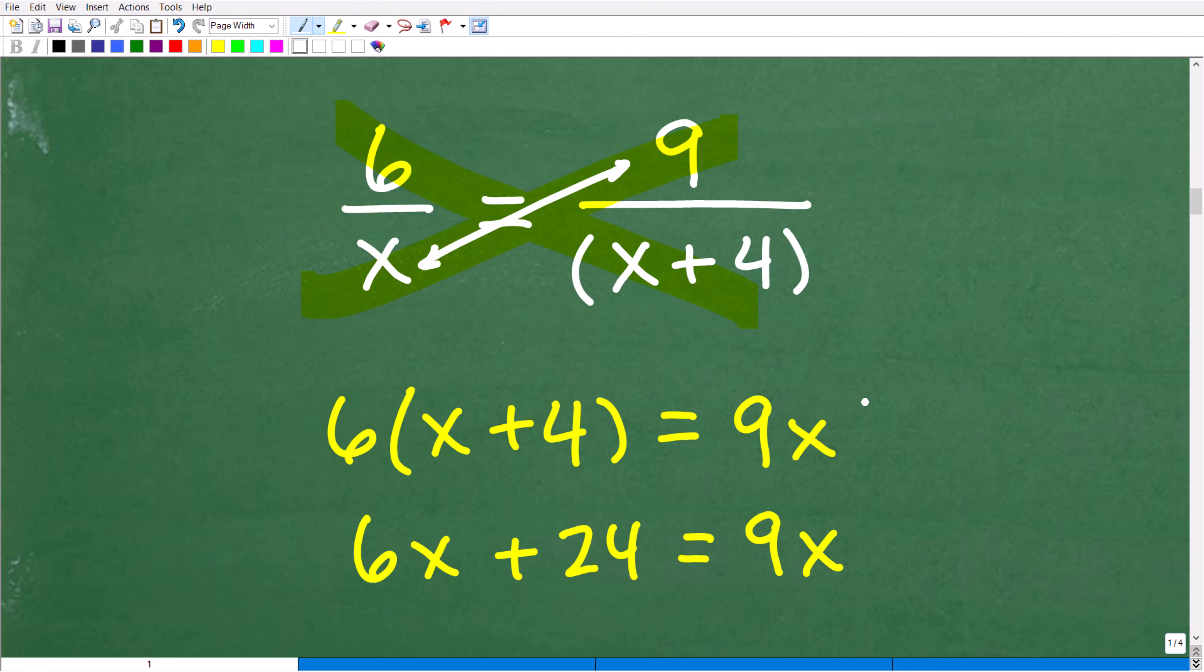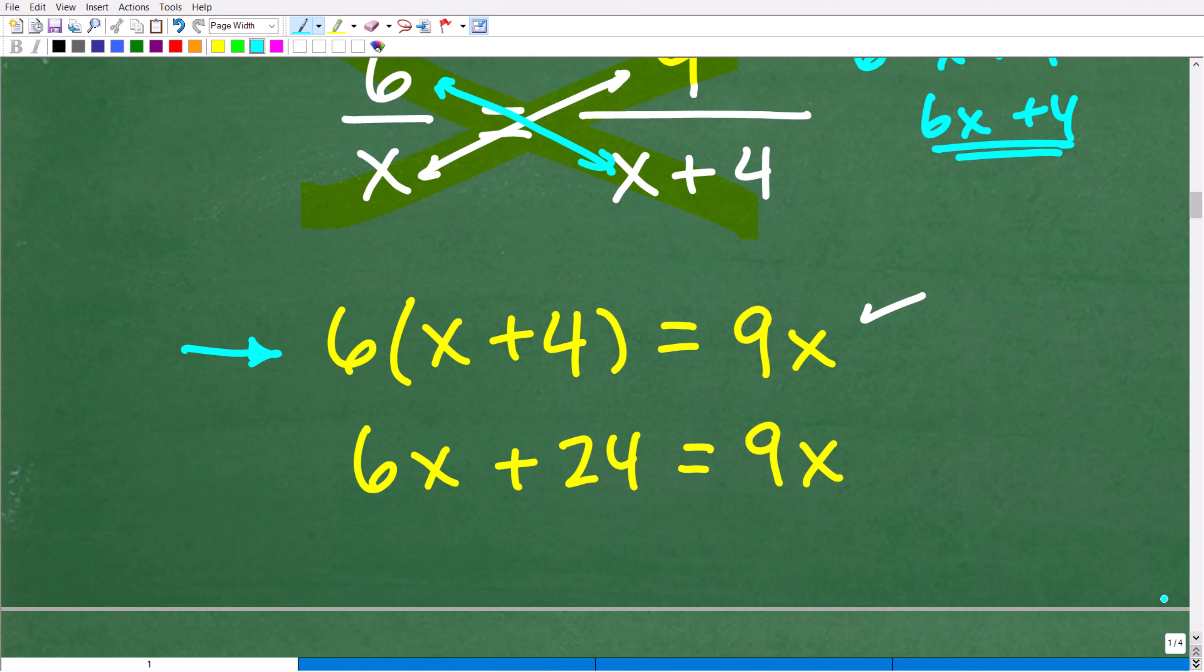Here is where the algebra gets interesting. Let's do the easy part first - x times 9 is simply 9x. But here we're going to multiply 6 times x plus 4. Some students confuse this - a very common mistake - they go 6 times x plus 4 and just write 6x plus 4. That's not 6 times x plus 4. We have to use the distributive property. Six times x is 6x, six times 4 is 24, equals 9x.